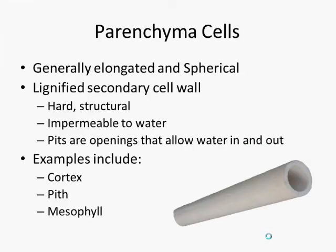Parenchyma cells' architecture are generally elongated and spherical. They often make up a lignified secondary cell wall that is hard with structural properties, is also impermeable to water, and has pits that allow water to pass through at specific locations.